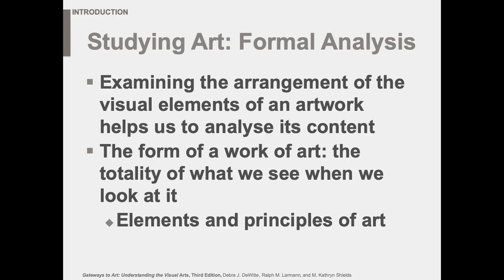So we're looking at ways that the artist is communicating through levels of representation and abstraction. We looked at that, and we also thought about what the subject matter might be — but there's a lot of clues about what the subject matter might be from the elements and principles. And remember when I was talking about the Mona Lisa: something is kind of more than the sum of its parts. So the form of a work of art is the totality of what we see when we look at it.